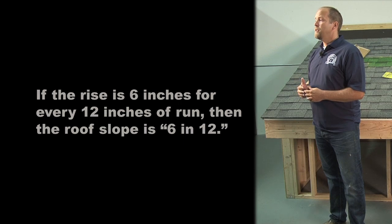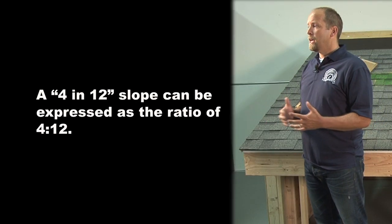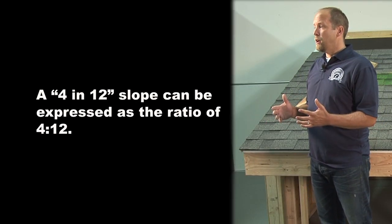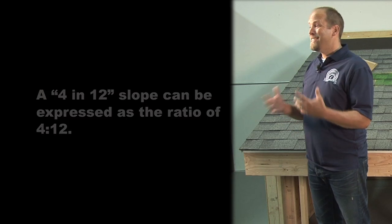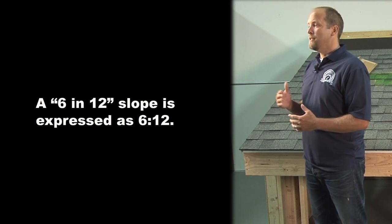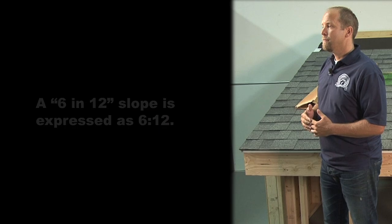The slope can be expressed numerically as a ratio. The slope ratio represents a certain amount of vertical rise for every 12 inches of horizontal run. For example, a 4 in 12 slope can be expressed as the ratio of 4:12. A 6 in 12 slope is expressed as 6:12. The triangular symbol above the roof line in this architectural plan provides information on the roof's slope, expressed as a ratio in inches per foot.